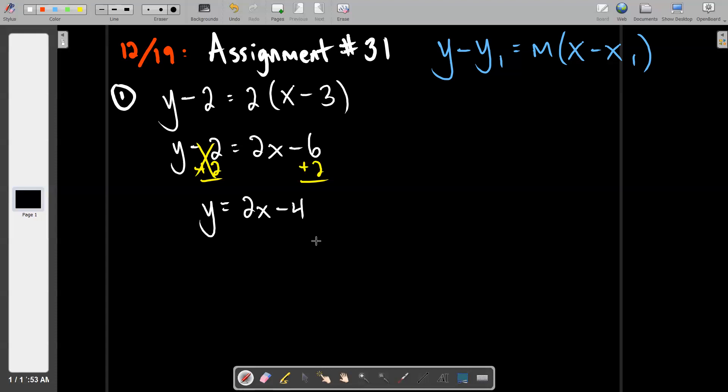We're going to wind up with our final answer, which is y equals 2x minus four. Any questions about that? So that obviously is answer R. So for problem one we select R, and that means at the bottom of the page, every time you see the number one, you're going to place the letter R.